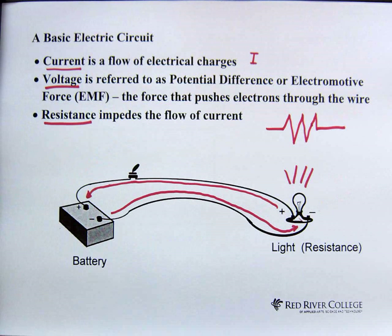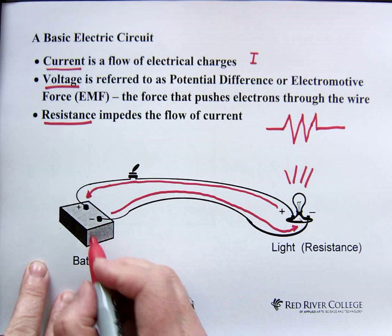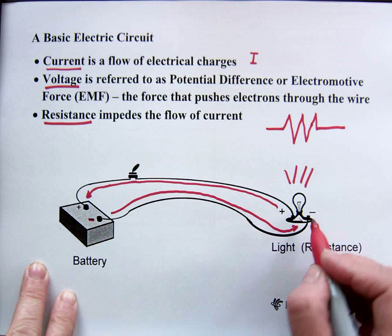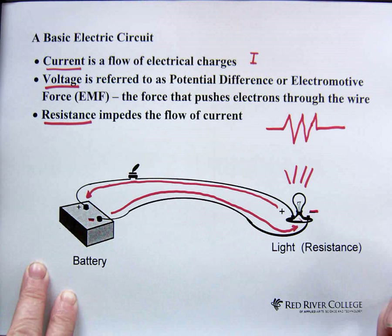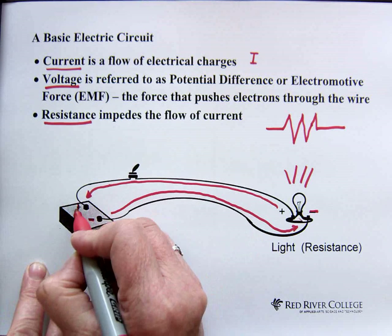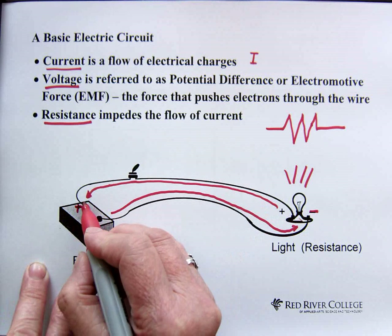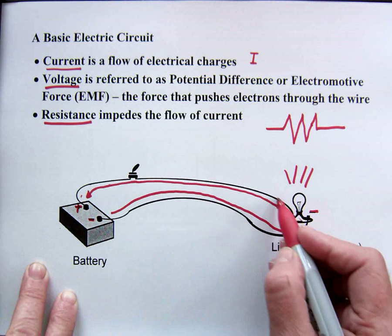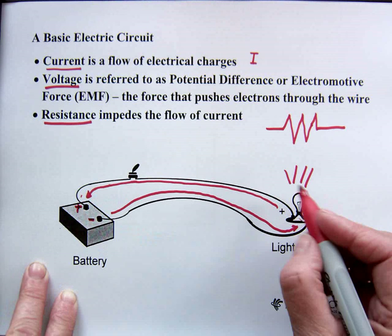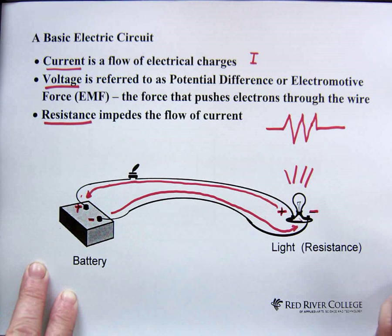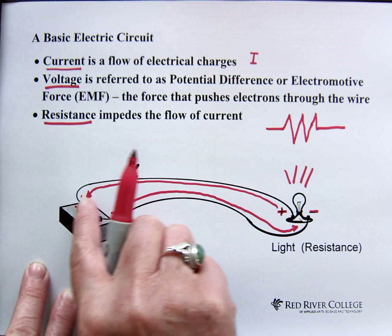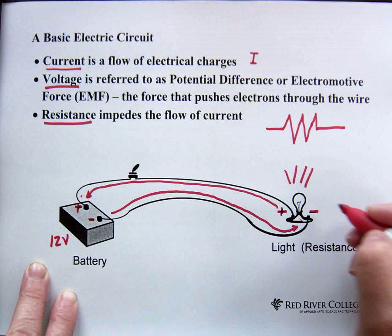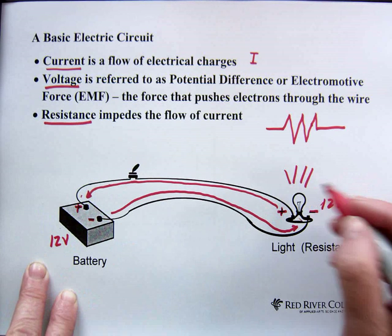We have a negative terminal on this side of the battery. That negative terminal is connected to the negative terminal on the light. And we have a positive terminal on this side. If it's positive on this side of the battery, it's positive on this side of the battery. Let's say there's 12 volts across this battery — we have 12 volts across this light, which causes the light to turn on.